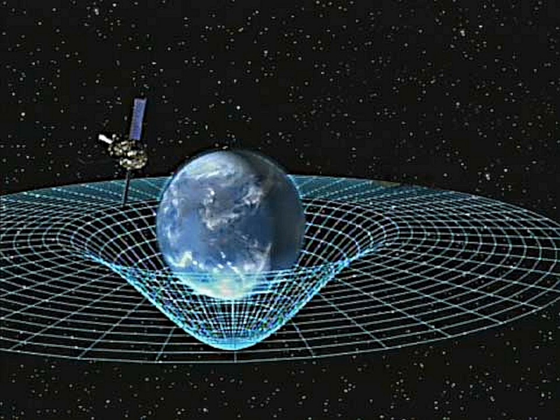Such pairs of events are called spacelike because they have a finite spatial distance different from zero for all observers. On the other hand, a straight line connecting such events is always the space coordinate axis of a possible observer for whom they happen at the same time.